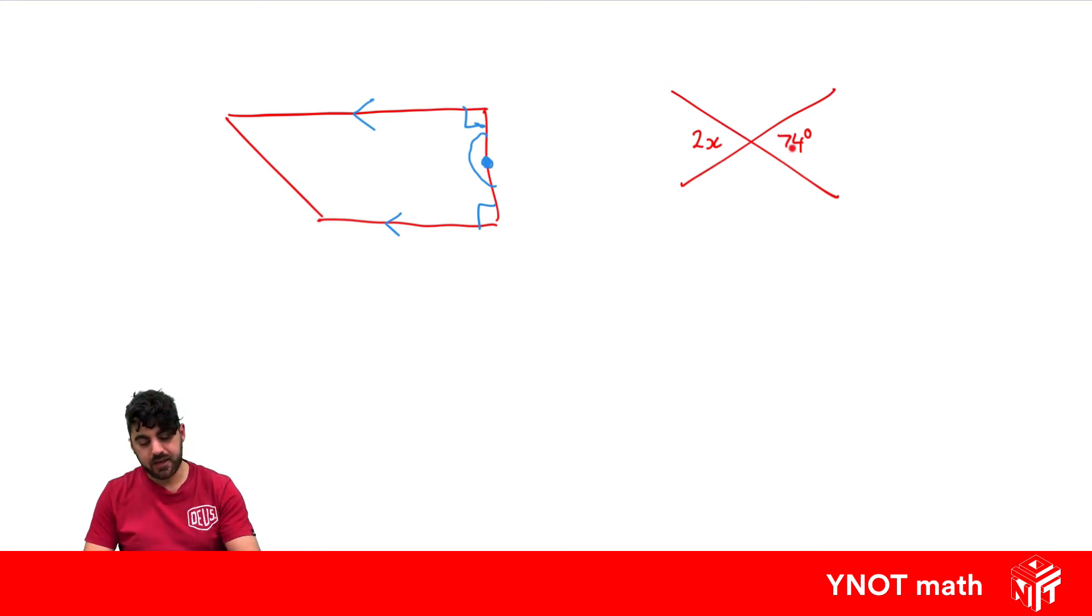So here this angle equals this angle because we have vertically opposite angles on these two straight lines and we know vertically opposite angles are equal. So the statement we can make is that 2x must equal 74 degrees. That's our statement. Now we need a reason on why that statement is true. And our reason is that vertically opposite angles are equal.